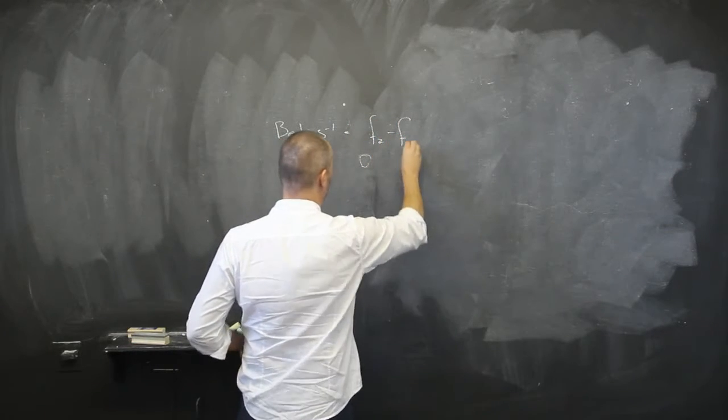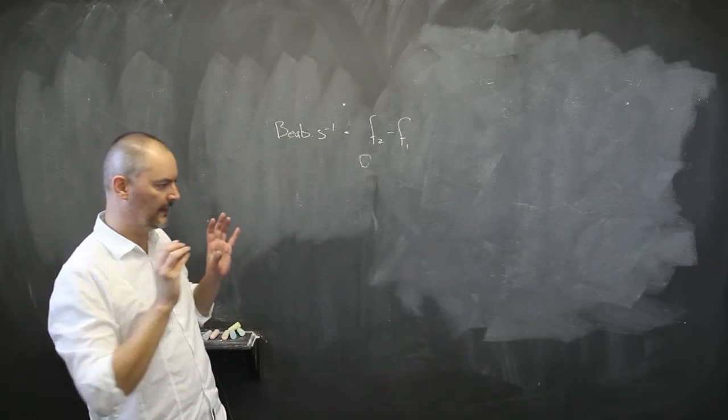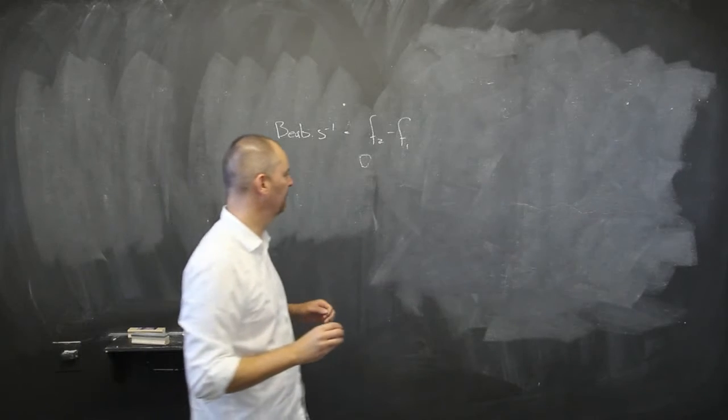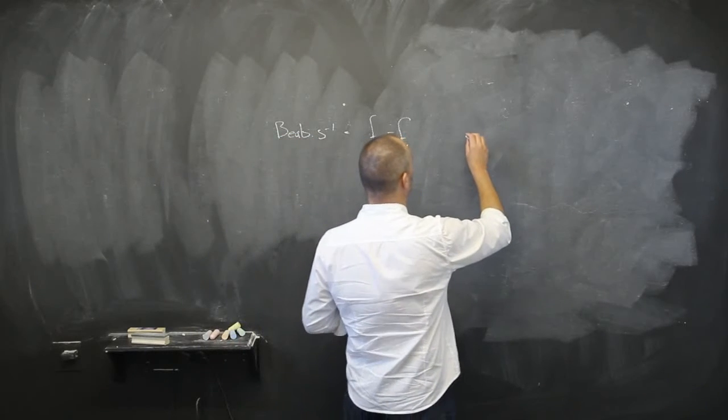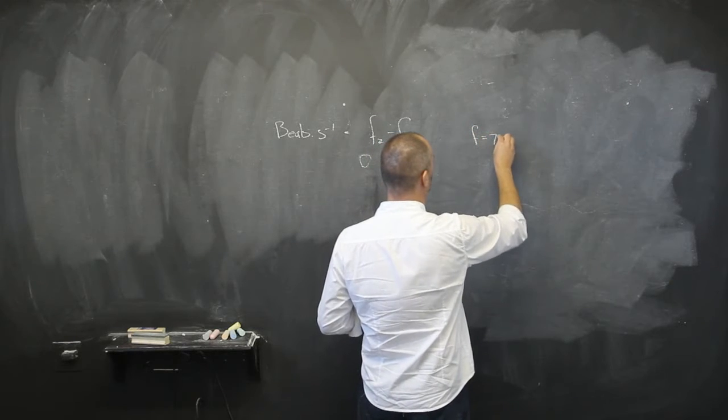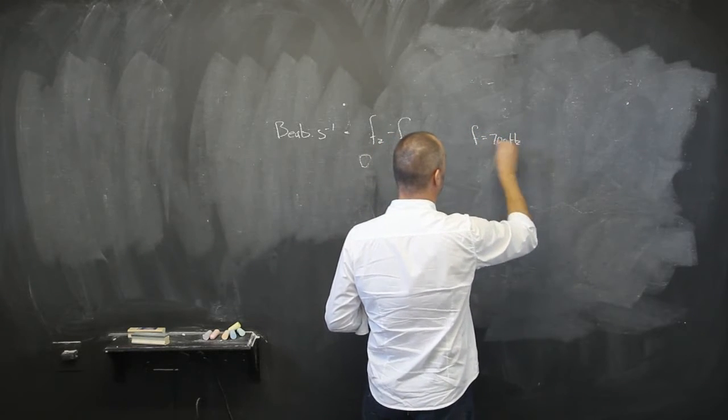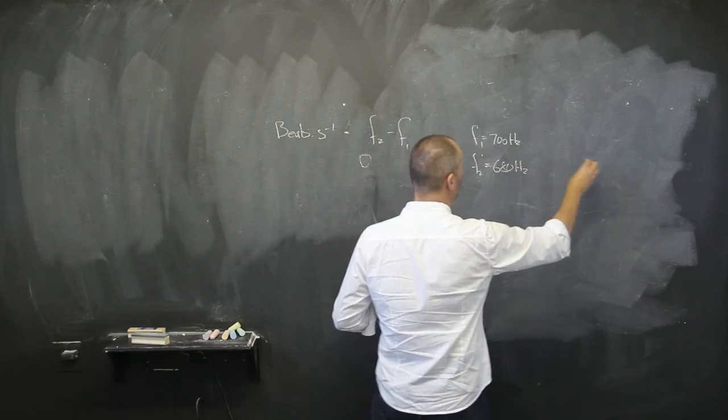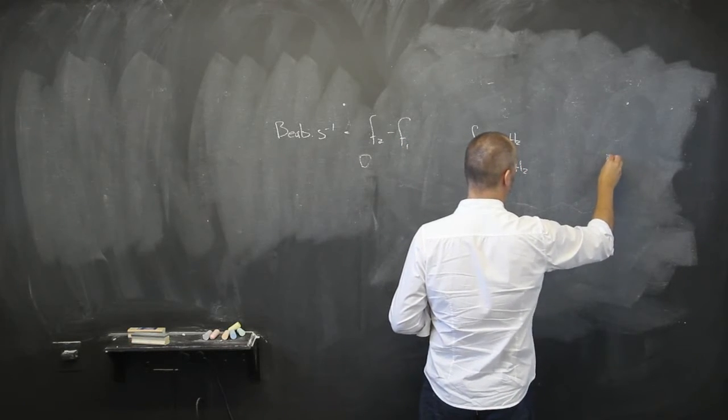So what happens is, say for instance, two sounds are emitted and come towards your ears. One source has a frequency of 700 hertz and the second one has a frequency of 680 hertz, and they both get emitted to your ear.